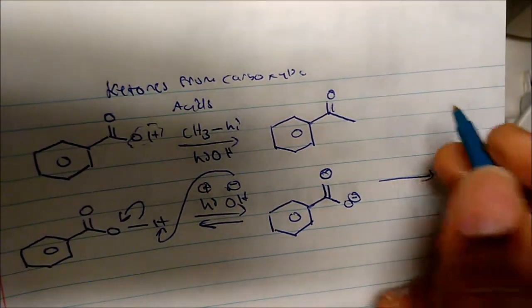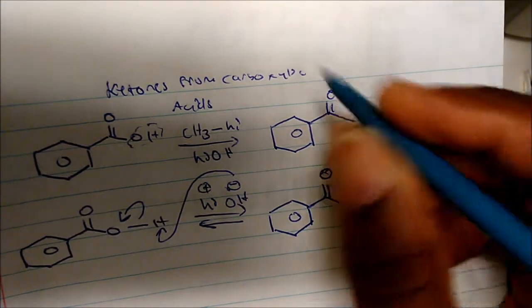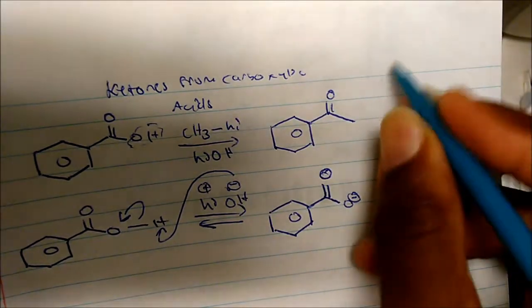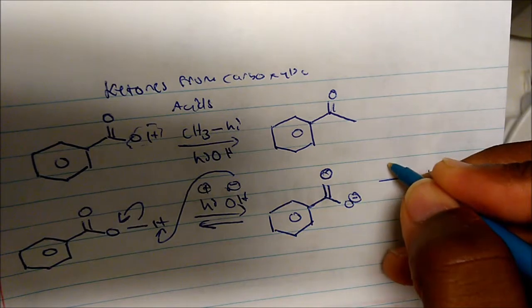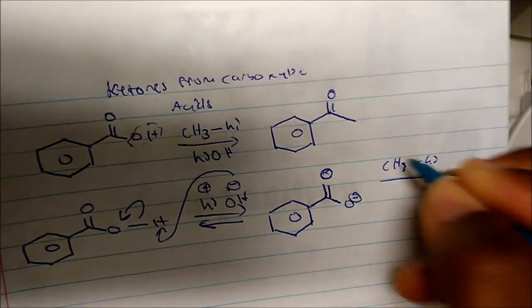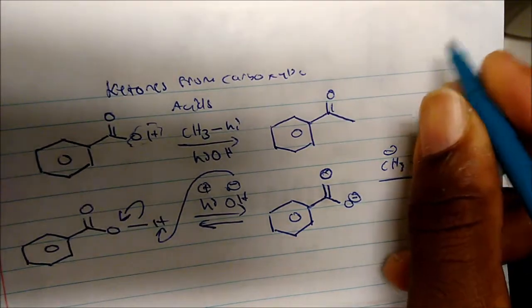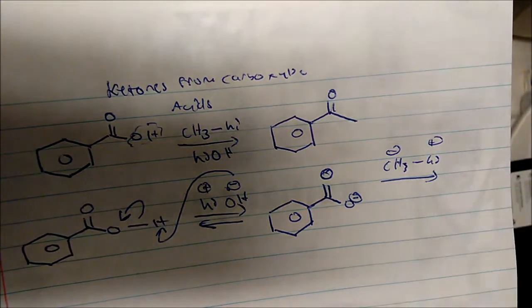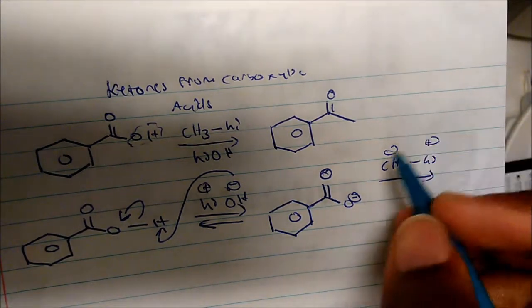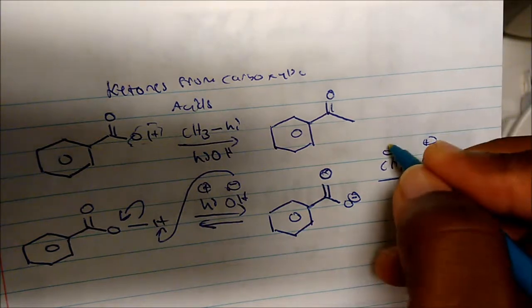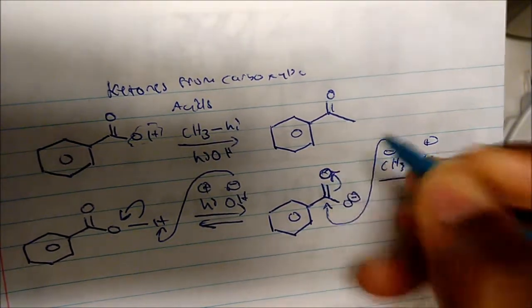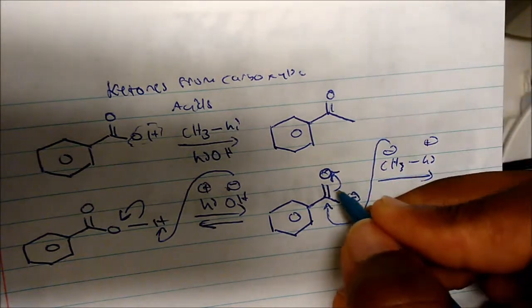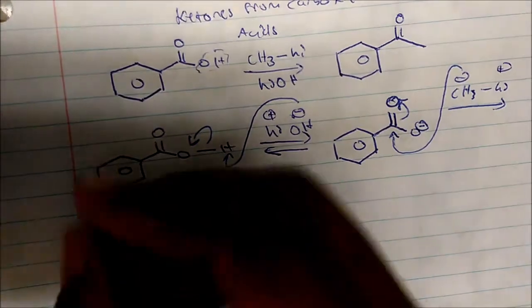Now in the next step, my R-lithium, or in this case my methyl lithium will actually come in. And we know the carbon is negatively charged, lithium is plus charged in solution, so my carbon is very nucleophilic, so it will come in and attack the carbon of the carbonyl, and we'll use those electrons to put on the carbonyl.